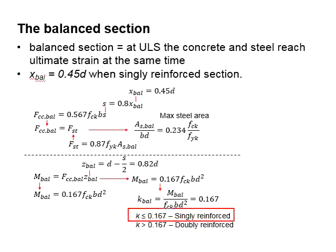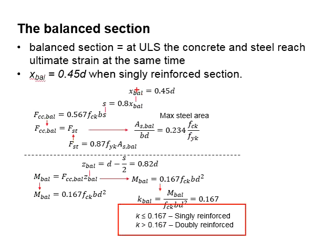When k is equal to or less than 0.167, singly reinforced section is assumed. If k is more than 0.167, doubly reinforced sections will be required. All this is determined on the basis of the x_balance equals to 0.45d.